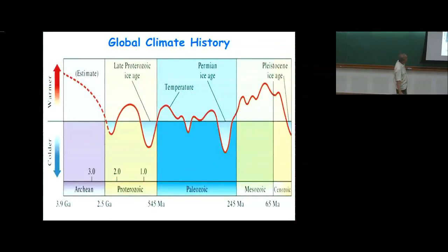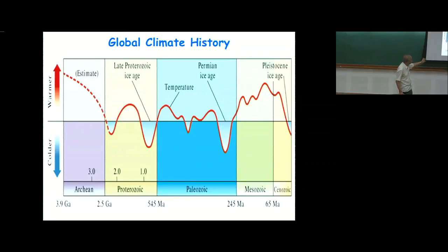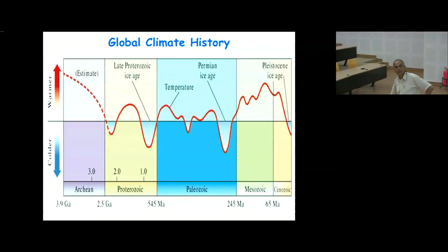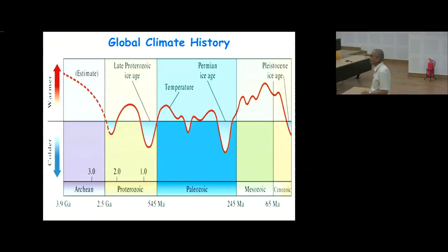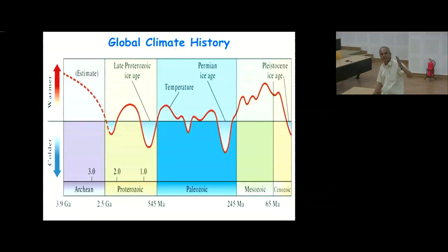If you look at the global mean temperature, which is the only quantity I'll talk about in this lecture, it has varied a lot over the last four billion years. Earth has gone through major ice ages and very warm periods. Note that this sketch is qualitative — we don't have quantitative numbers for this longer period.